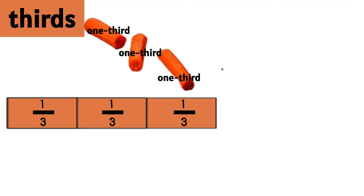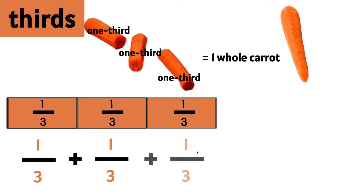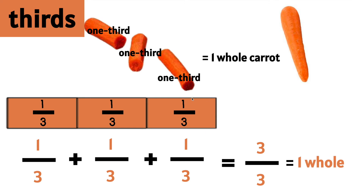If we put these thirds together we get one whole carrot. In the same way, if we add one third plus one third plus one third we get three thirds — three out of three. And if we have all three parts of this whole that has three parts, then we have the whole.